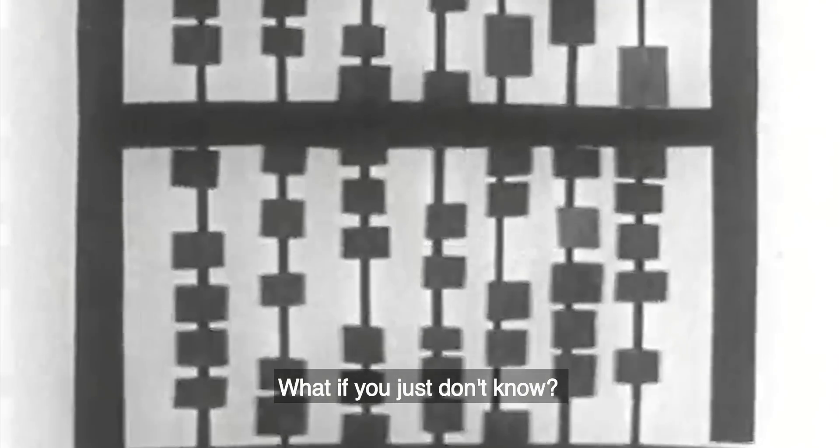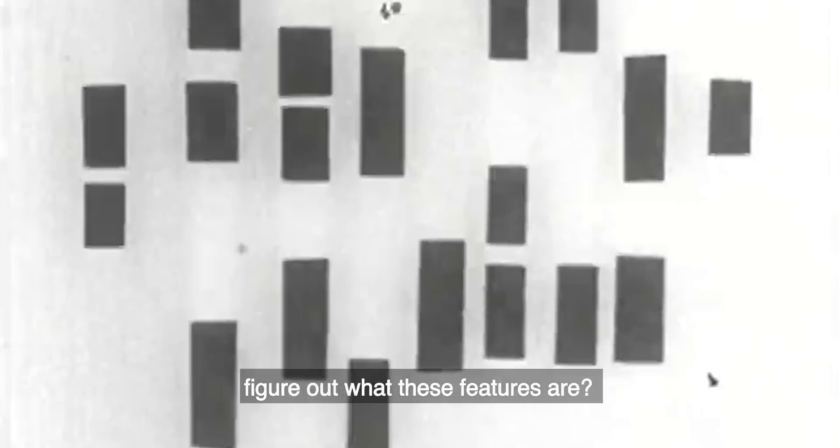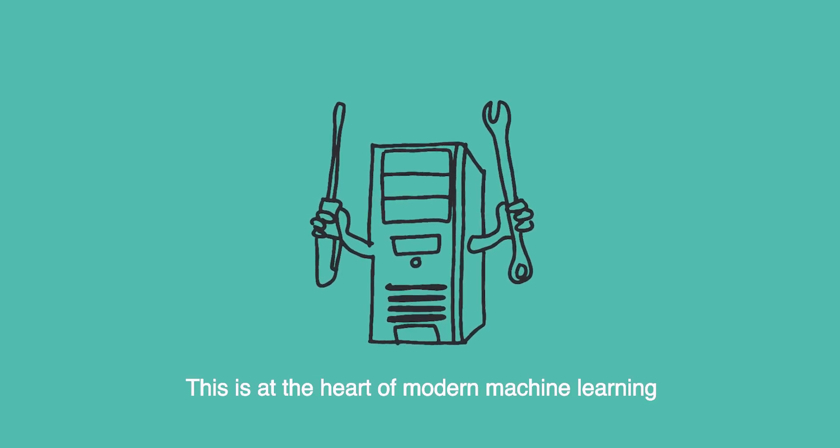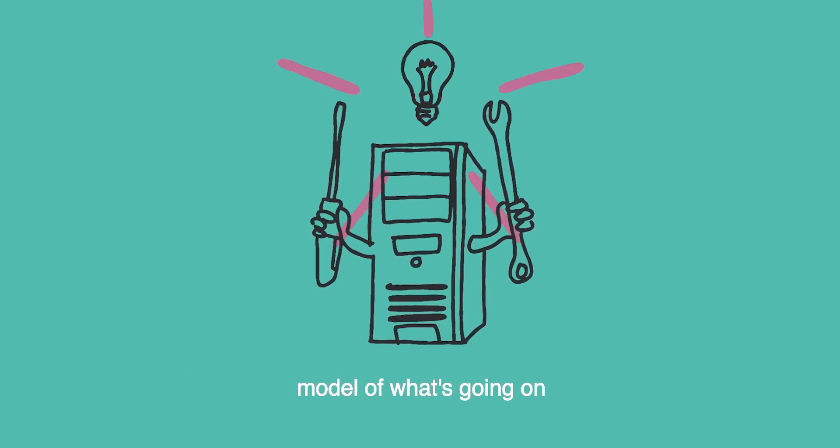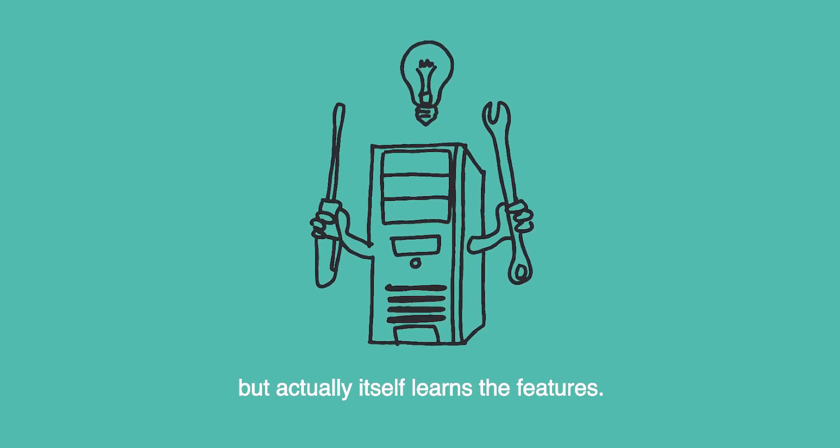What if you just don't know? What if you need to figure out what these features are? This is at the heart of modern machine learning, where the computer not just builds a model of what's going on, but actually itself learns the features.